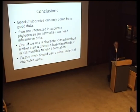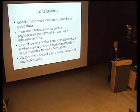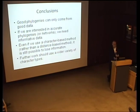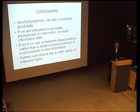In conclusion: good phylogenies can only come from good data. If we are interested in accurate phylogenies or networks, we need informative and accurate data. Even if we use character-based methods versus distance-based methods, it's still possible to lose information — converting one sort of character into another still loses information, just as distance-based analyses like UPGMA lose information by converting characters into distances. The conclusion is that further work of this type should use a wider variety of characters, and of course the data should be more accurate.